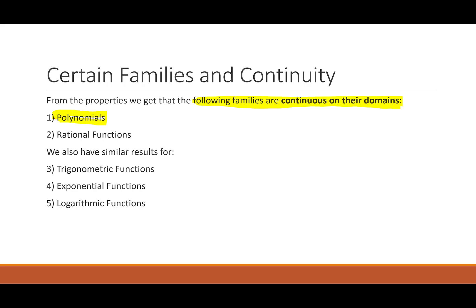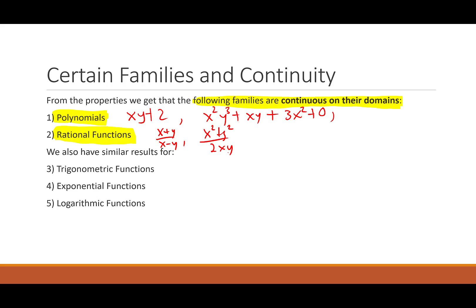Polynomials and rational functions are both continuous on their domain. A polynomial is anything like x·y + 2, or x²y³ + xy + 3x². These are continuous everywhere on their domain, and polynomials are defined everywhere — they don't blow up. Rational functions are quotients of polynomials, like (x + y)/(x − y) or (x² + y²)/(2xy). These are continuous on their domain as well, although rational functions could have more complicated domains than polynomials, so be careful.